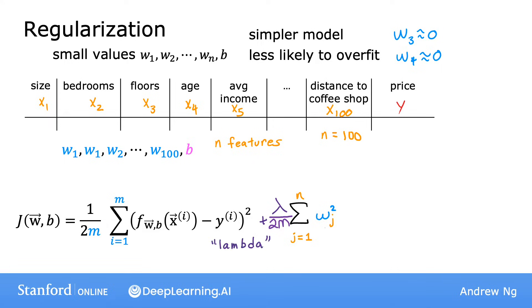This value lambda here is the Greek alphabet lambda and is also called a regularization parameter. So similar to picking a learning rate alpha, you now also have to choose a number for lambda. A couple things I would like to point out, by convention, instead of using lambda times the sum of wj squared, we also divide lambda by 2m so that both the first and second terms here are scaled by 1 over 2m.